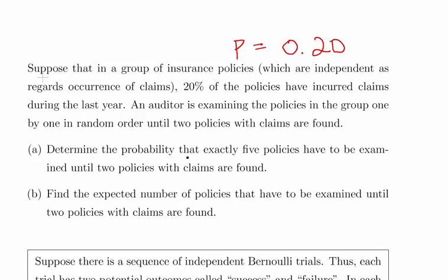Part (a): Determine the probability that exactly five policies have to be examined before two claims are found. This is what sets up the negative binomial distribution - how many Bernoulli trials must occur before you get a certain number of outcomes.